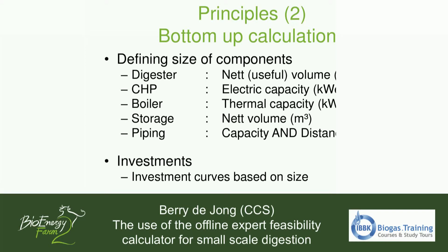The CHP will be defined by the electric output. For the boiler, we use the thermal capacity. For storage, we use the net volume. And for piping, we use the diameter and the distance of the pipes.